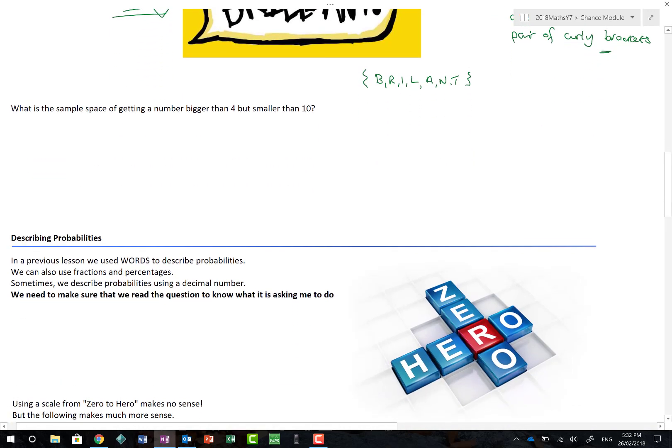What about this one here? What is the sample space of getting a number bigger than 4 but smaller than 10? Now, we're not talking about dice here. We're literally just talking about numbers. Because it's got to be bigger than 4. Well, 5 is bigger than 4. 6 is bigger than 4. 7 is bigger than 4. 8 and 9. But it's got to be smaller than 10. So that's where we finish. There's my curly braces. And job is done. So there's a subtle difference between sample space and possible outcomes.